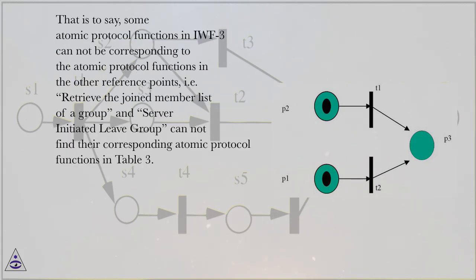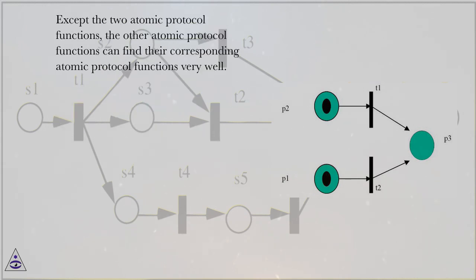That is to say, some atomic protocol functions in IWF3 cannot correspond to the atomic protocol functions in the other reference points — i.e., retrieve the join member list of a group, and server-initiated leave group cannot find their corresponding atomic protocol functions in Table 3. Except for these two atomic protocol functions, the other atomic protocol functions can find their corresponding atomic protocol functions very well.